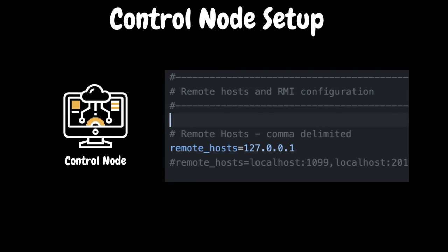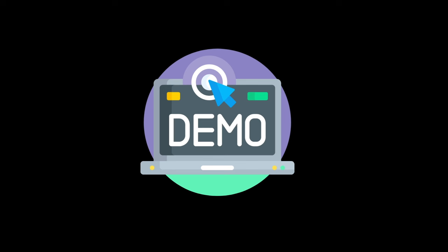Finally, we have the control node setup. On the control node, we need to go to the JMeter bin directory, open the JMeter properties file, and specify the worker node information in the remote_hosts property. If you have multiple hosts, you can use a comma as a delimiter while specifying IP address information. By default, the control node will use a random port for communication. If you want a specific port, then we can specify that in the client.rmi.localport property. Now, let's set these configurations in JMeter and run a quick distributed load test.